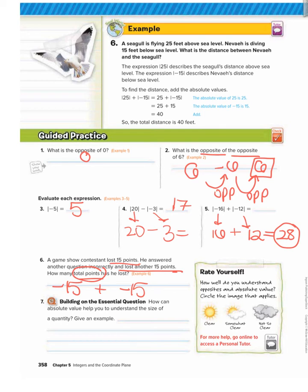To find how many points he lost in total: 15 points lost plus another 15 points lost equals 30 points lost in total.